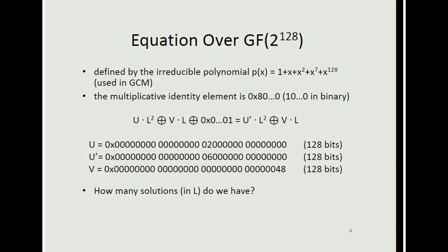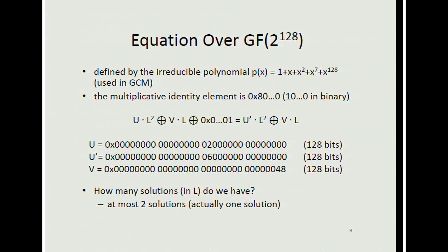I'd like to consider an equation over GF(2^128) defined by the irreducible polynomial used in GCM. The multiplicative identity element is 1 (zero bits). The equation is u·H^2 ⊕ v·H ⊕ 1 = u'·H^2 ⊕ v·H, where u, u', and v are sparse constants with weight 2, 6, and 48 respectively. I'm interested in the number of solutions; since the degree of this polynomial is 2, the equation has at most two solutions.